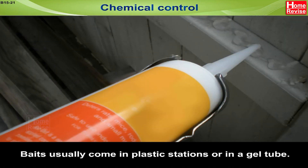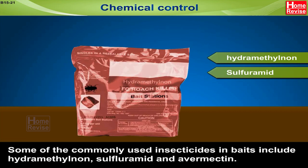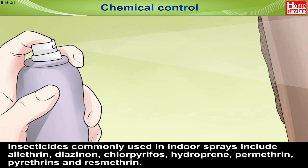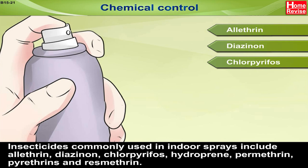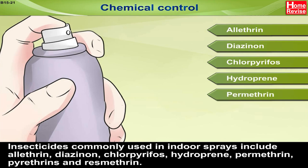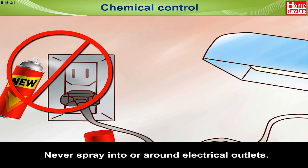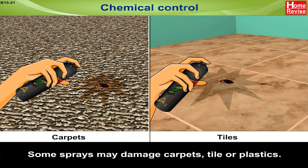Baits usually come in plastic stations or in a gel tube. Some of the commonly used insecticides in baits include hydramethylnon, sulfluramid and avermectin. Sprays in either liquid or aerosol form generally provide the quickest control of cockroaches. Insecticides commonly used in indoor sprays include cyfluthrin, diazinon, chlorpyrifos, hydroprene, permethrin, pyrethrins and resmethrin. Never spray into or around electrical outlets. Some exposed surfaces where cockroaches crawl can be treated, but food preparation and eating areas should be avoided. Some sprays may damage carpets, tiles or plastics.